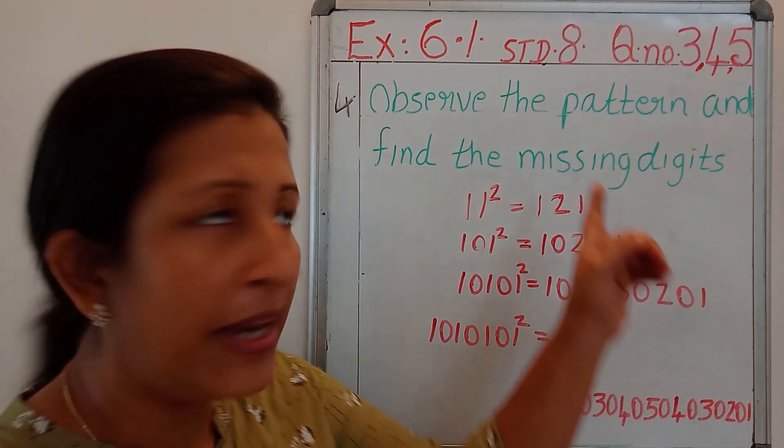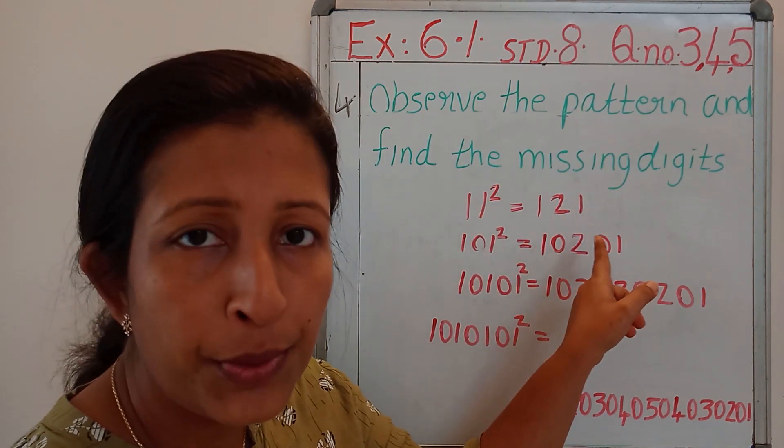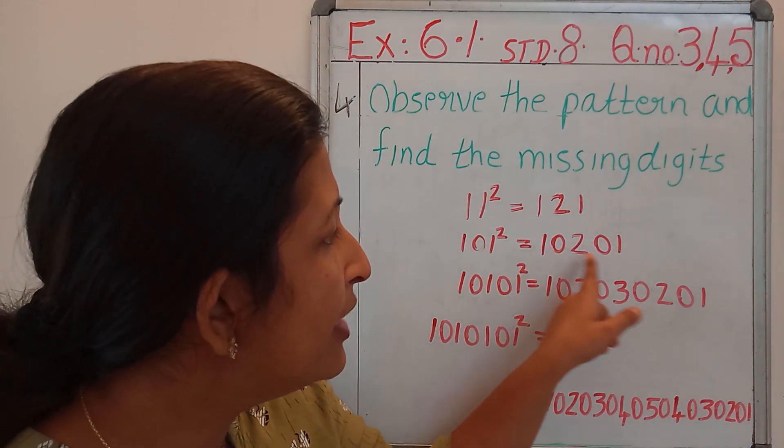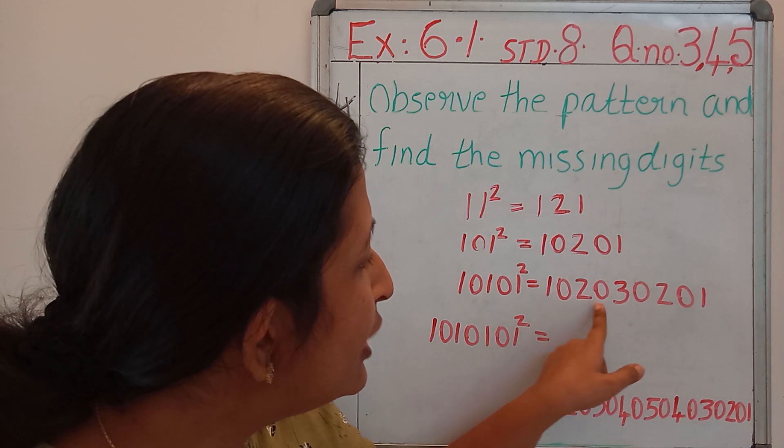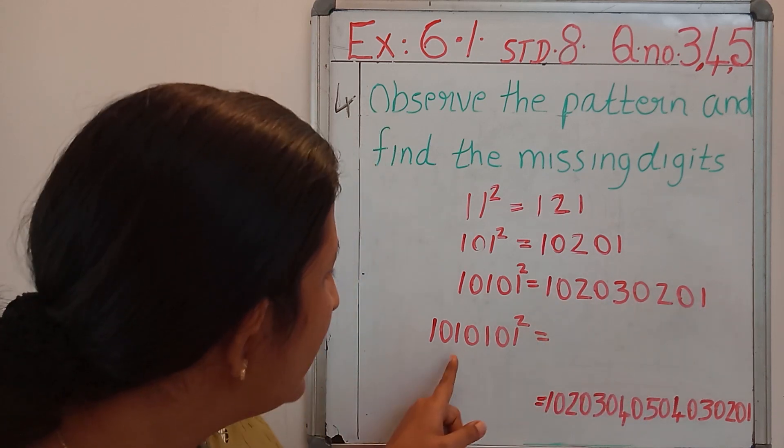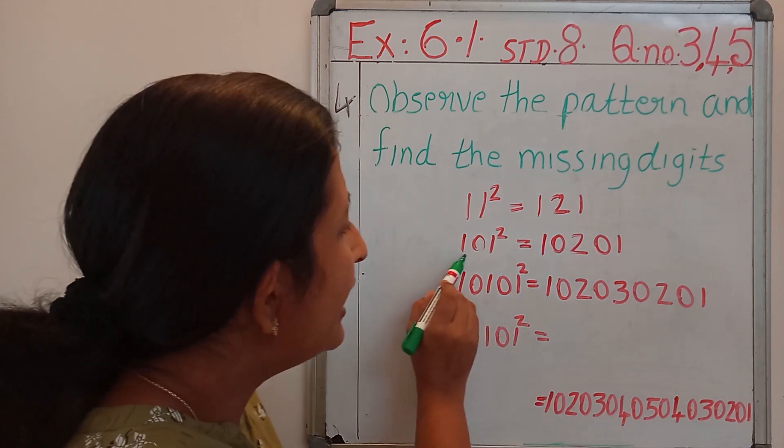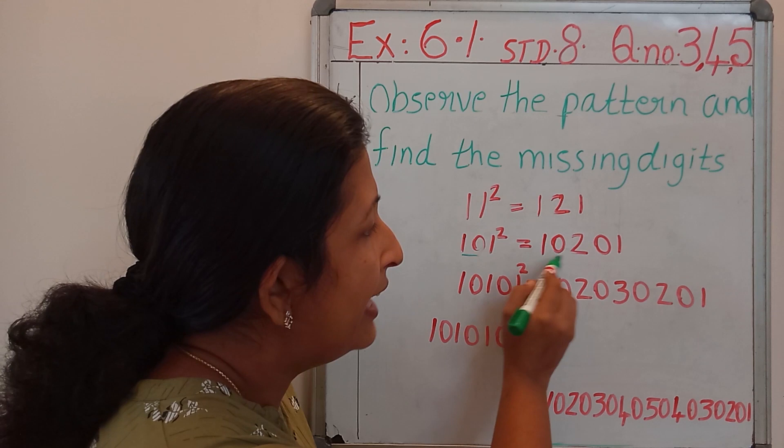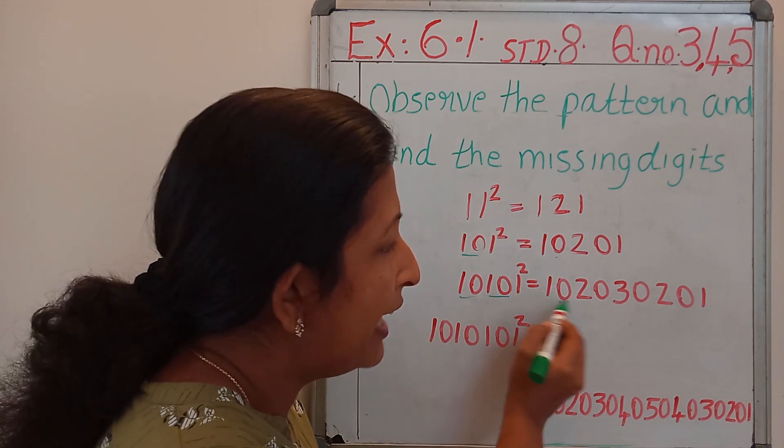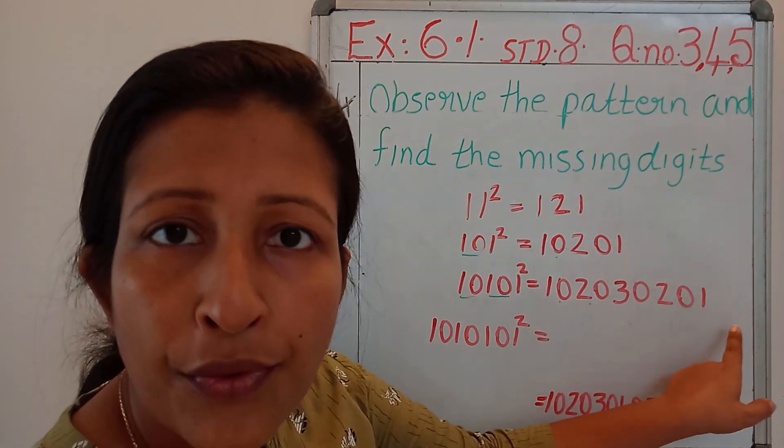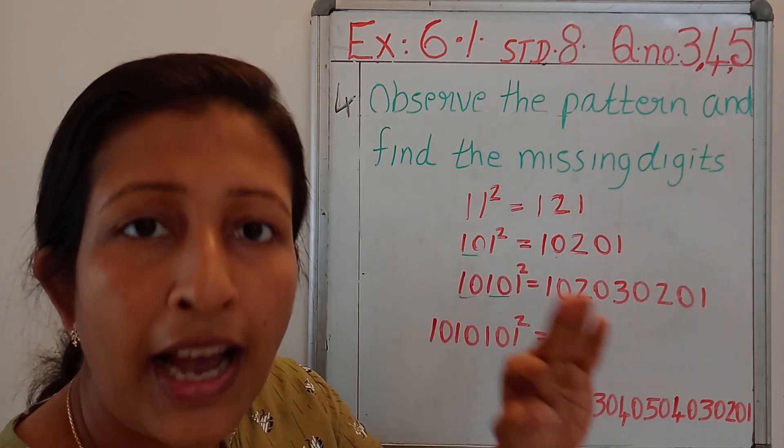Question number 5 is again a pattern: observe the pattern and find the missing digits. Pattern is like this: 11 square is 121, 101 square is 10201, 101010 square is 102030201. Here 110 so we wrote 10 and 20. Here 110 second time so we wrote 10, 20, 30 and in the reverse order 20 and 1.